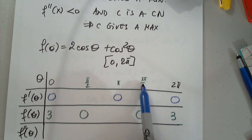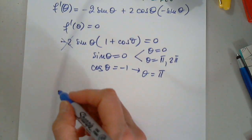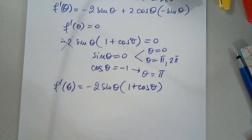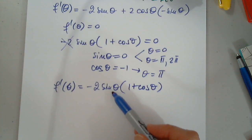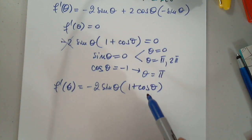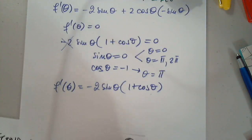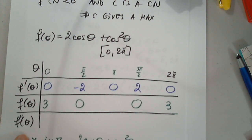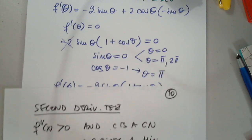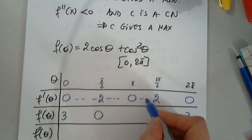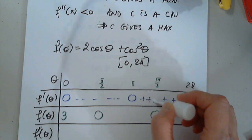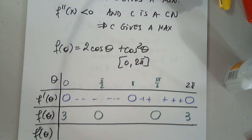I'm going to use pi over two to study the sign here, and three pi over two to study the sign of the derivative. F prime is negative two sine theta times one plus cosine theta. When I plug in pi over two, sine is one, cosine is zero, so I get negative two. When I plug in three pi over two, sine is negative one, cosine is negative one, so this will be positive. Just the sign — we only need the sign.